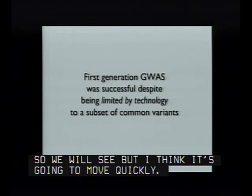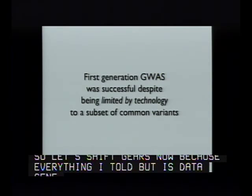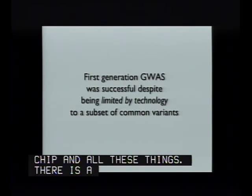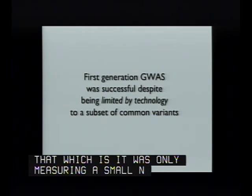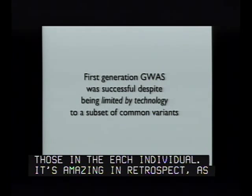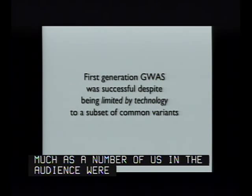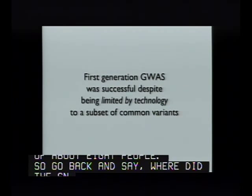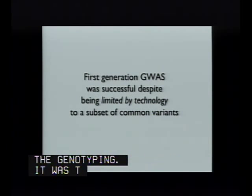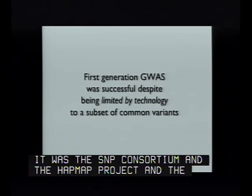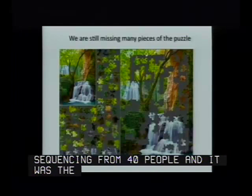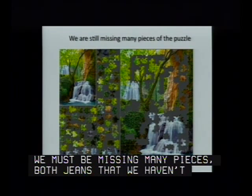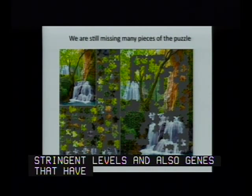I'm going to shift gears now. Everything I've told you is data generated in the last three years on the GWAS platform, built on HapMap and chips. But there's a big limitation: it was only measuring a relatively small number of the variants in each individual. It's actually amazing in retrospect that it worked, because it was all based on the sequencing of about 40 people—equivalent to about 8x coverage of the genome. We must be missing many pieces: genes that don't have common variants with large enough effect to reach stringent statistical significance, and genes that have common variants but also have rare variants that no one has yet sequenced.